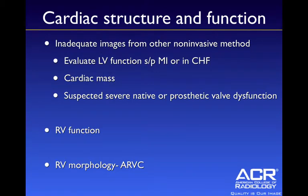Cardiac structure and function — if we have inadequate images from other non-invasive imaging modalities, we can consider cardiac CT for evaluating LV function, cardiac mass, or prosthetic valve dysfunction. Cardiac CT is very good for looking at mechanical prosthetic valve dysfunction, looking for fractures in the strut or ring, and these can be performed without contrast. RV function and RV morphology such as ARVC — arrhythmogenic right ventricular cardiomyopathy — are better evaluated by MRI, but cardiac CT is appropriate if there are contraindications to MRI.